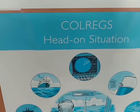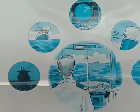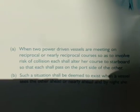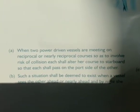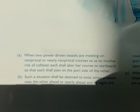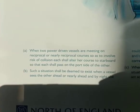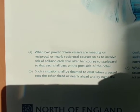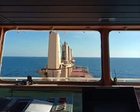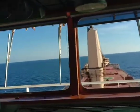Let's apply collision regulations for a head-on situation in our actual navigation. Here's a short description: when two power-driven vessels are meeting on reciprocal or nearly reciprocal courses so as to involve risk of collision, each shall alter her course to starboard so that each shall pass on the port side of the other vessel.